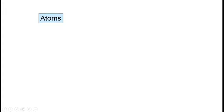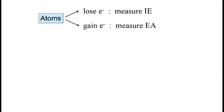When we studied atoms early in the course, we said that they can lose electrons to form cations. The energy change that is associated with that process is the ionization energy. Atoms can also gain electrons to form anions. The energy change associated with that process is the electron affinity.